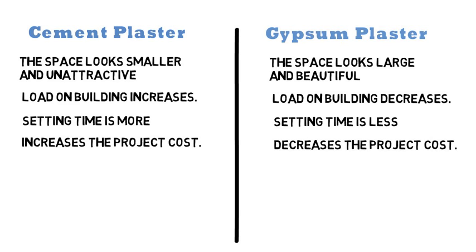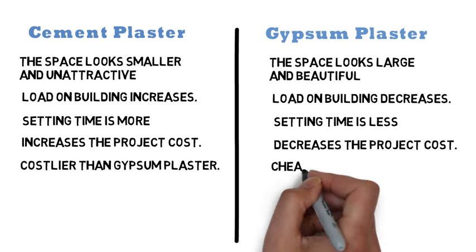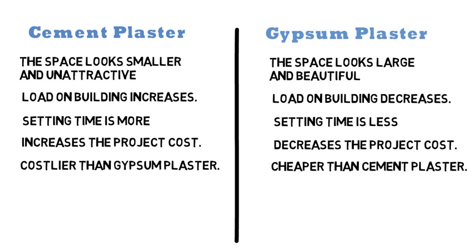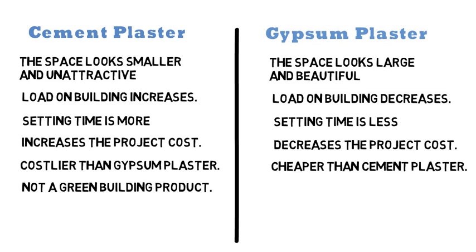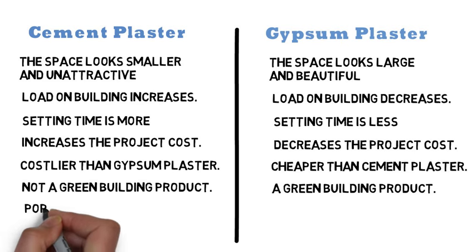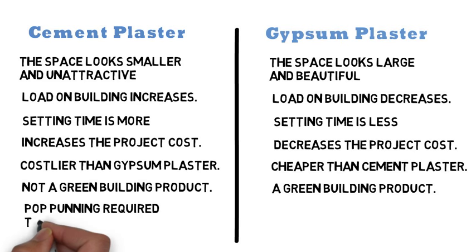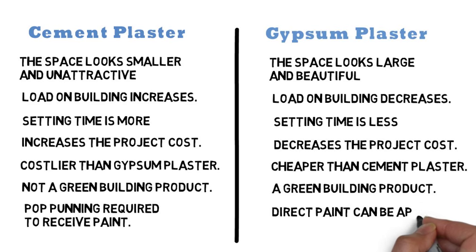Nowadays, river sand availability is a major problem and river sand has become costly. Hence cement plaster is costlier than gypsum plaster. Gypsum plaster is cheaper as compared to cement plaster. Cement plaster is not a green building product, whereas gypsum plaster is a green building product. In case of cement plaster, we need POP punning on the plastered surface to receive paint. But in case of gypsum plaster, POP punning is not required — we can directly apply the paint.